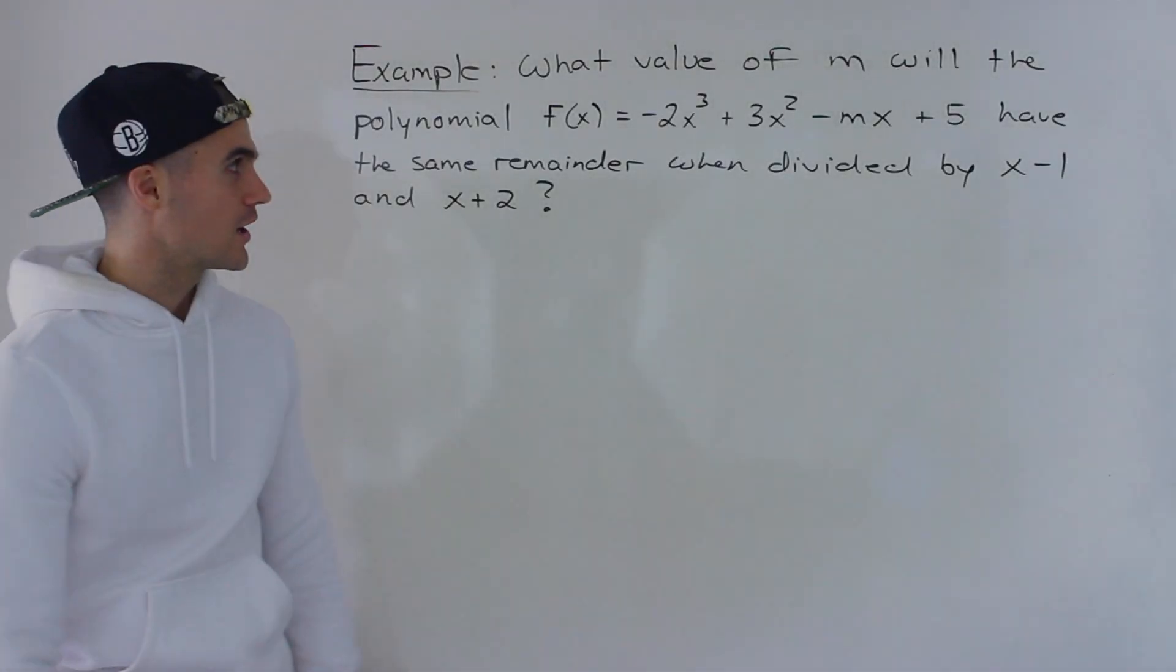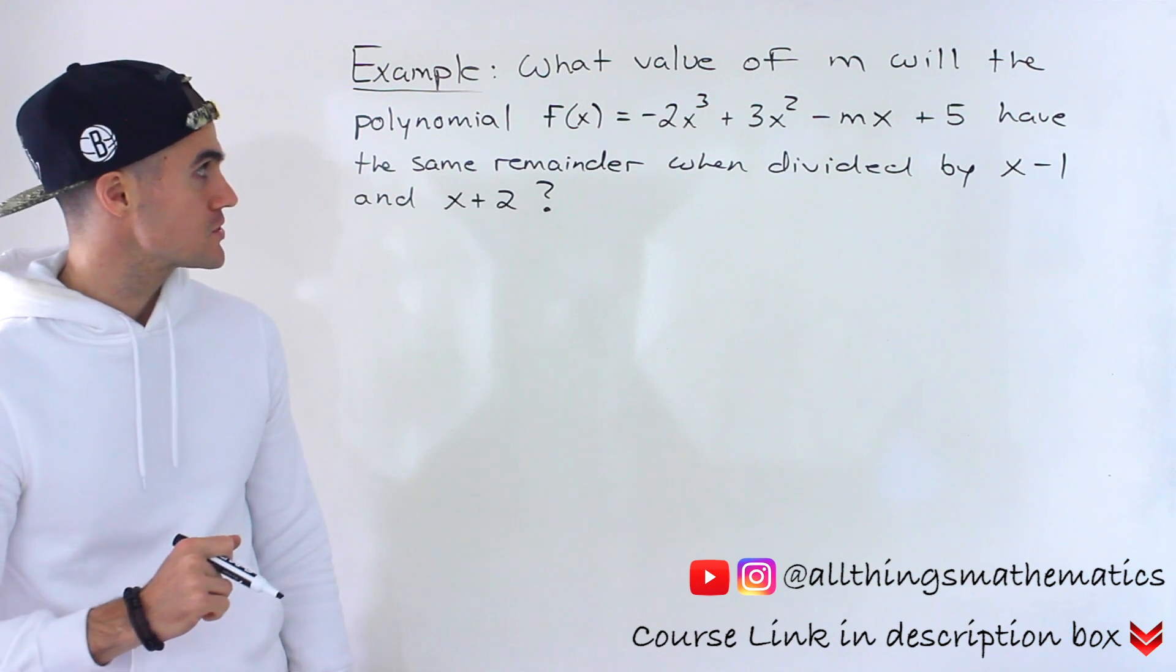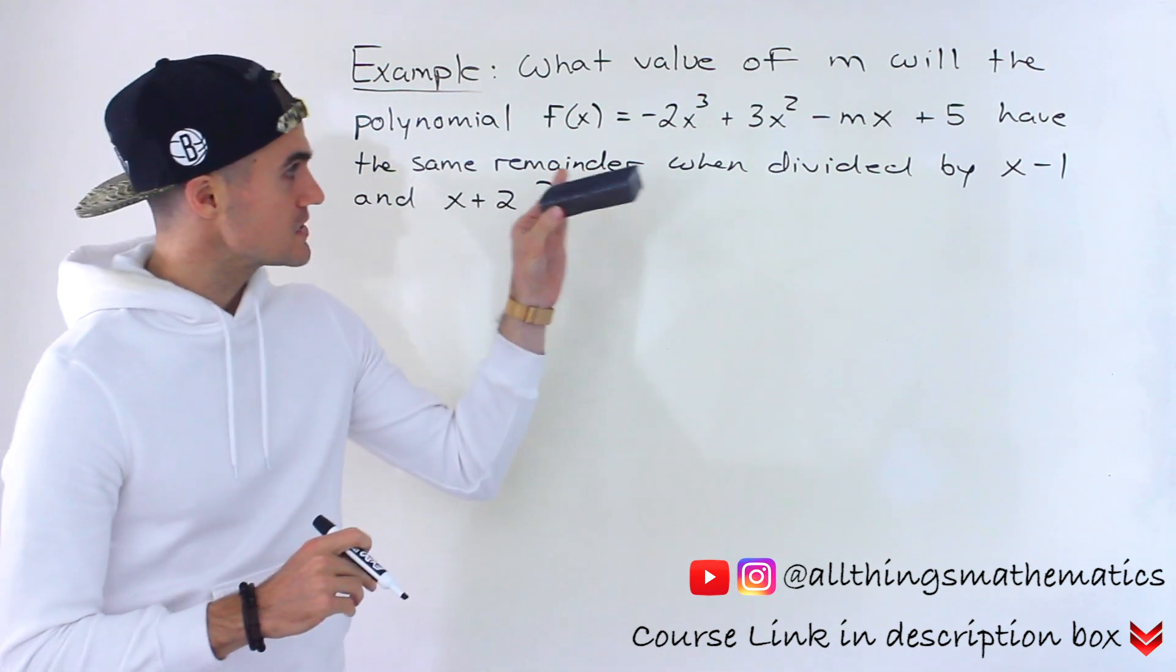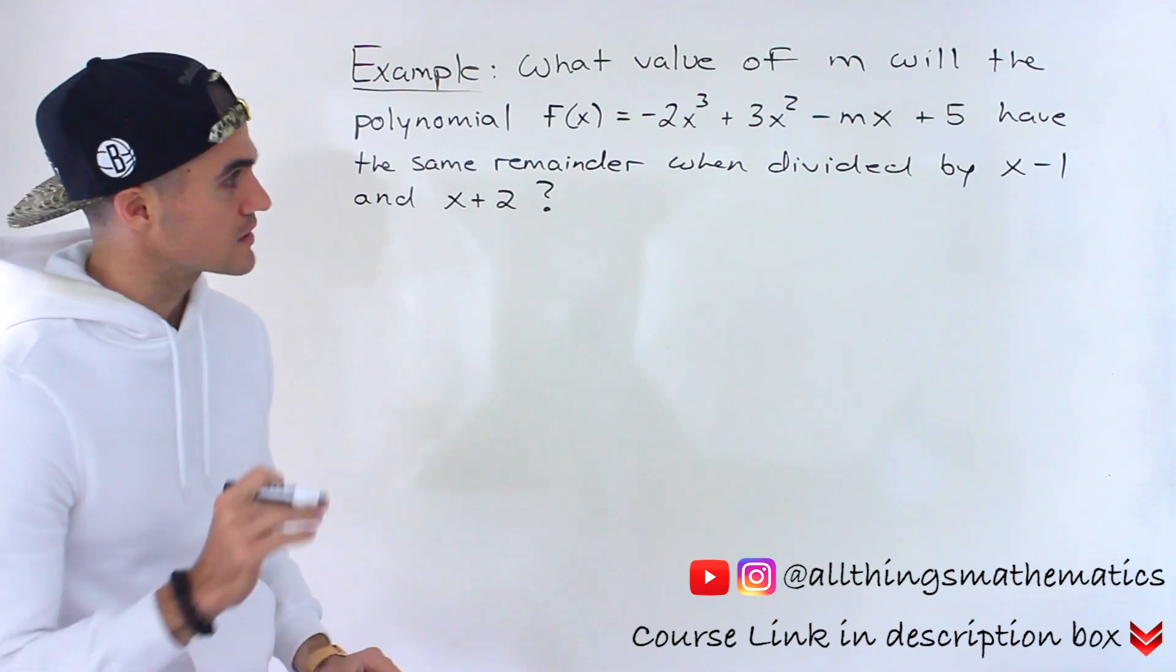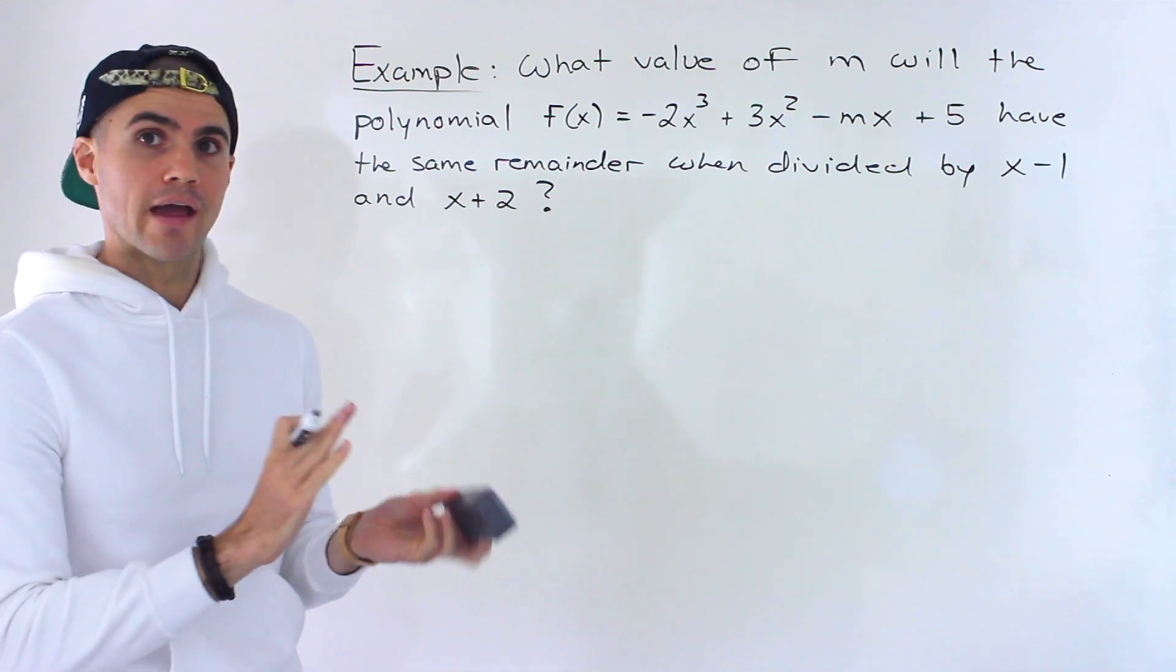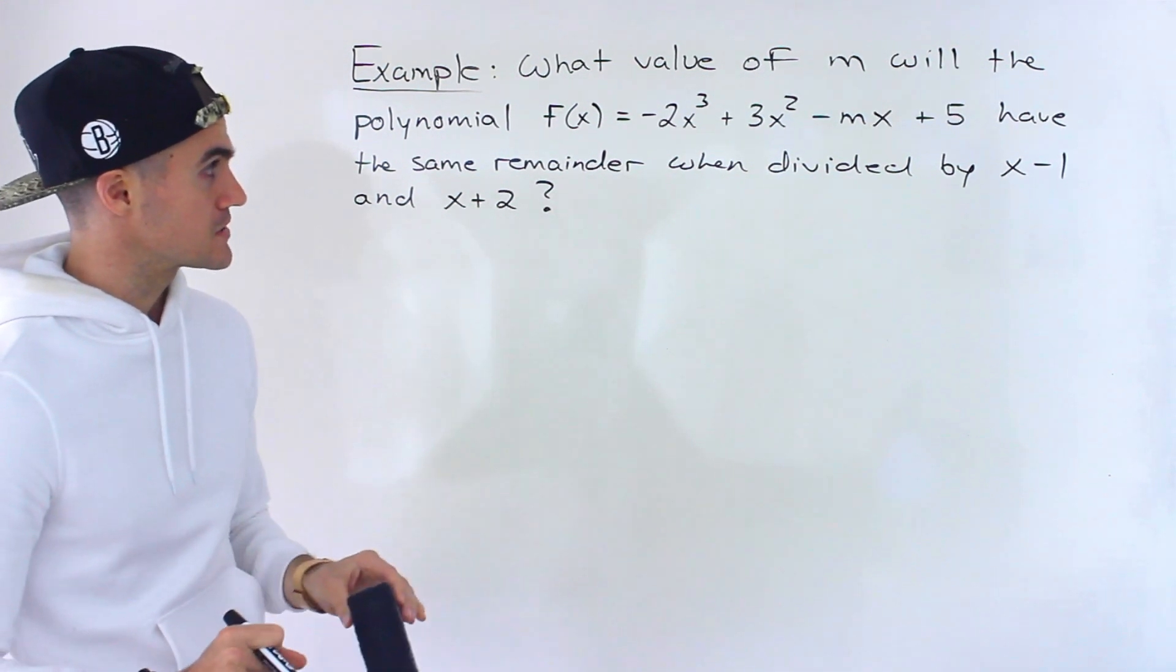Welcome back everyone. Patrick here, moving on to another question dealing with the remainder theorem for polynomials. What value of m will the polynomial f(x) = -2x³ + 3x² - mx + 5 have the same remainder when it's divided by x - 1 and when it's divided by x + 2?